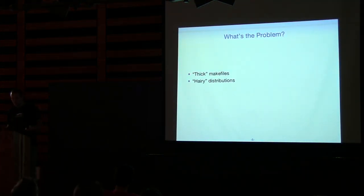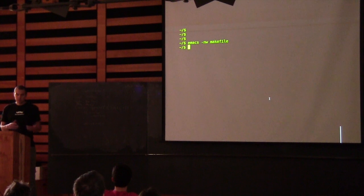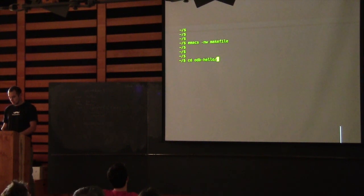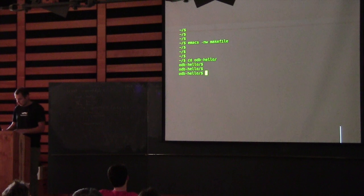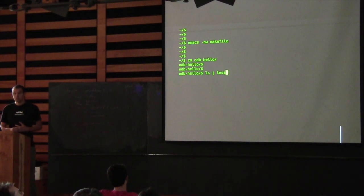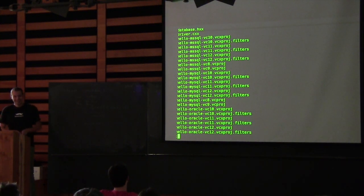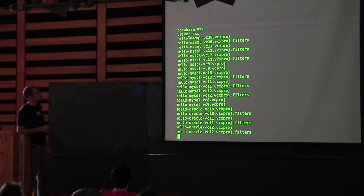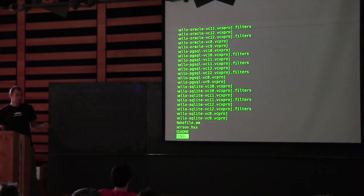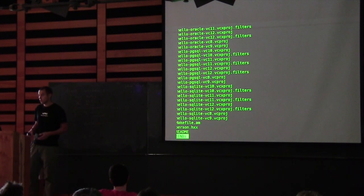The other problem is hairy distributions. Remember I mentioned that Build is used to automatically generate Visual Studio projects. This is a distribution for the same Hello example — it has a couple of source files, the meat of the example. But the rest is basically Visual Studio projects for different databases and different versions. This is only going to get worse because Microsoft now releases a new version of Visual Studio every year.